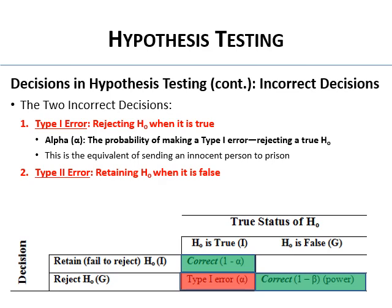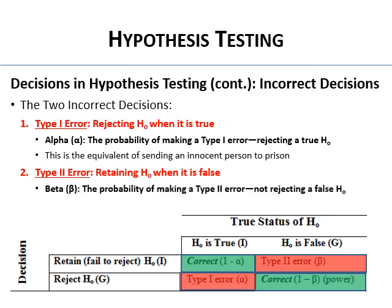The other type of error is a Type II error — when you retain the null when it's false. The null says no difference, you retain it, but in reality there was a difference or an effect. The Greek letter for that is beta — your probability of making a Type II error. We don't usually talk about beta directly; instead we focus on power. One minus beta is power — your ability to reject a null when you should, which we'll cover in lecture two.